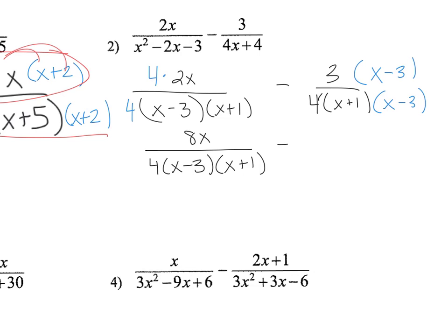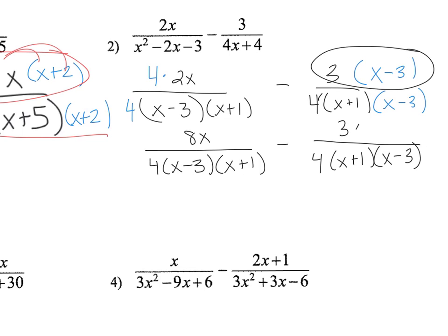And the right-hand side becomes 4 times x plus 1 times x minus 3. This part is 3, and this part is 3x minus 9. So when you combine these, you have to be very careful because you're subtracting, so both of these need to get the opposite sign. So this is going to turn into 8x minus 3x plus 9.